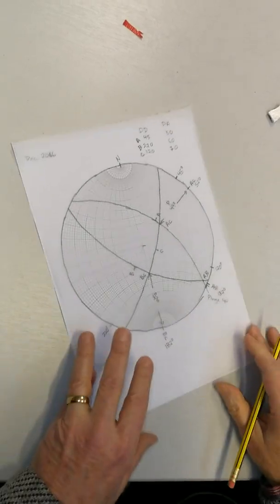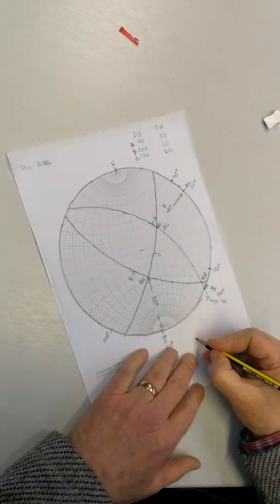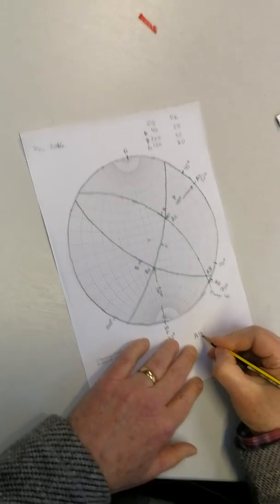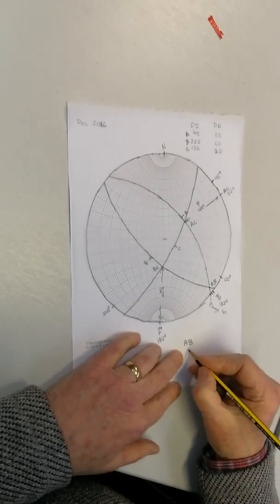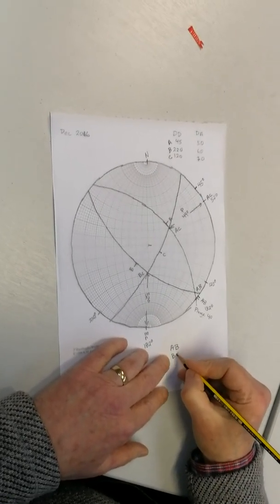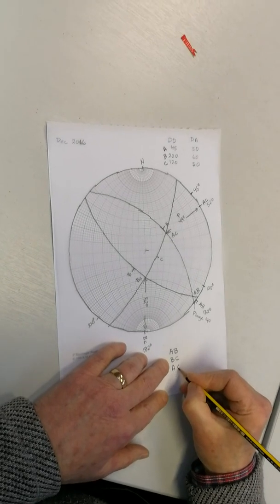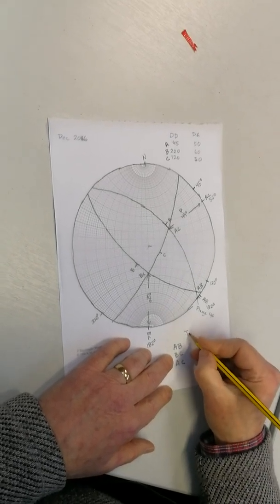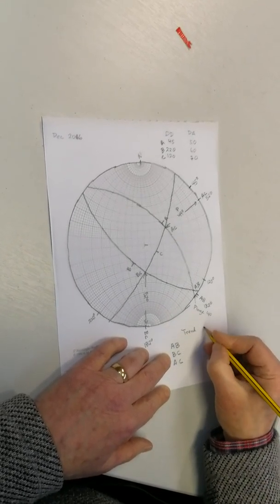And I might just summarize that down here. AB, BC, and then AC. And here is trend, and here is plunge.